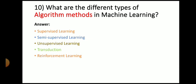Next question: what are the different types of algorithm methods in machine learning? The answer is: supervised learning, semi-supervised learning, unsupervised learning, transduction, and reinforcement learning.